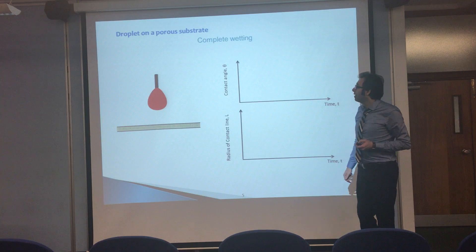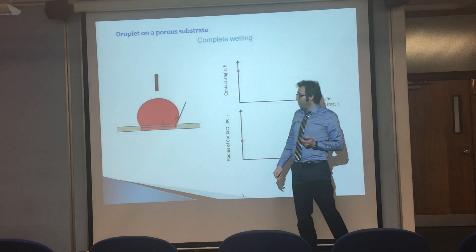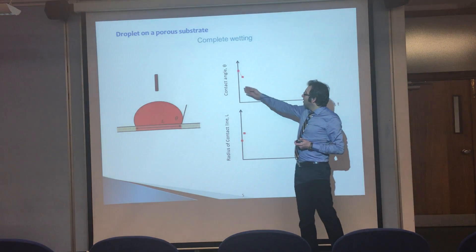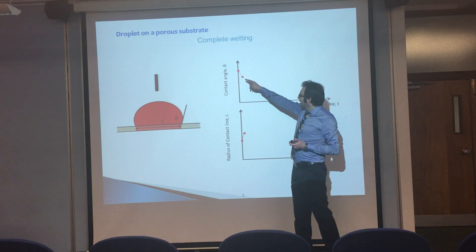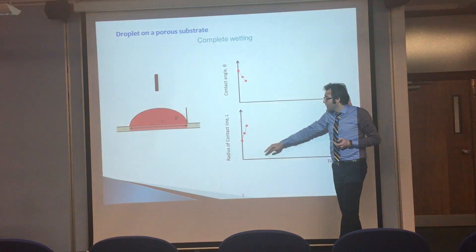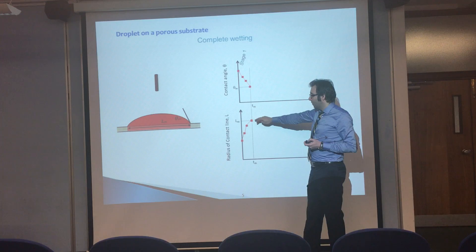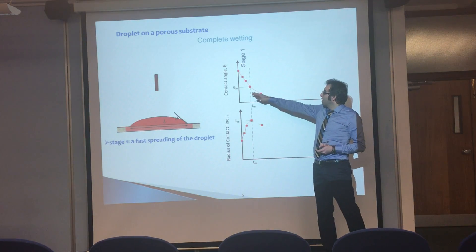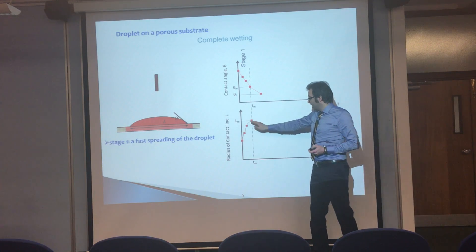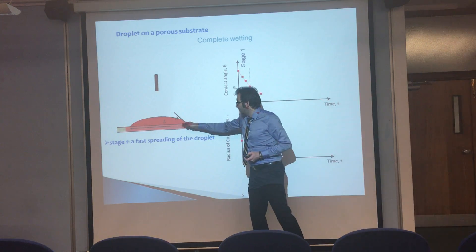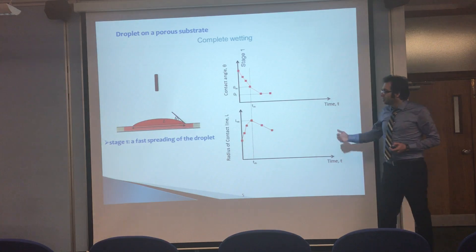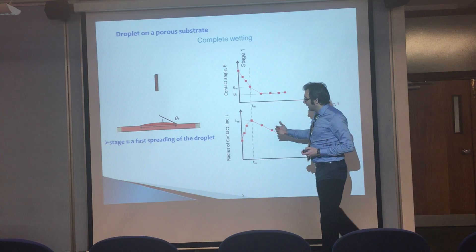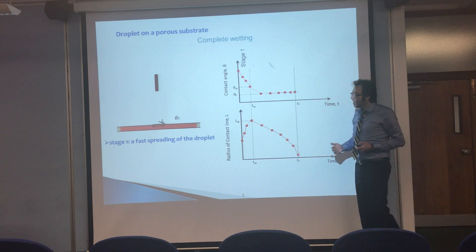Now let's consider the complete wetting behavior. If we deposit the droplet over the porous substrate and monitor the contact angle and the droplet base radius, we see that initially the drop spreads over the porous layer: the contact angle decreases and the droplet base radius increases until it reaches its maximum value. So the first stage is again the fast spreading of the droplet over the porous layer. After this stage the contact angle decreases to its final value, but the droplet base radius also decreases because of penetration inside the porous layer. This stage continues until all the droplet is sucked by the porous substrate — so the second stage is the shrinkage of the droplet base radius.